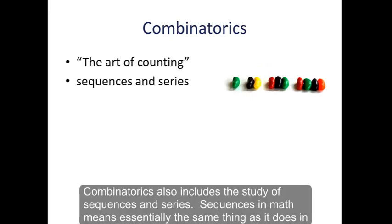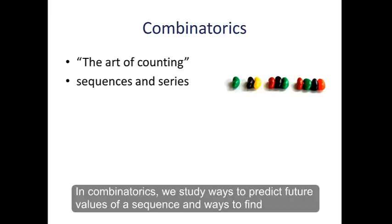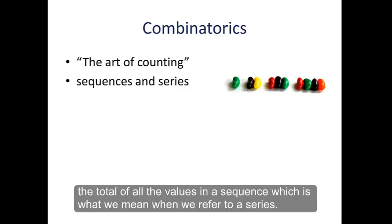Combinatorics also includes the study of sequences and series. Sequences in math mean essentially the same thing as it does in English. It's a list of numbers that follows a specific pattern or formula. In combinatorics, we study ways to predict future values of a sequence, to come up with the formula that a sequence follows, and ways to find the total of all of the values in a sequence, which is what we mean when we refer to a series.